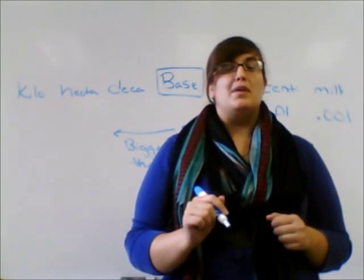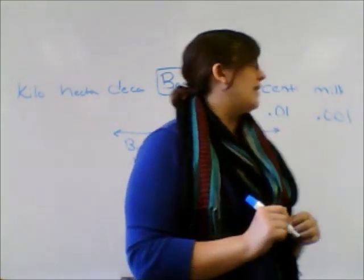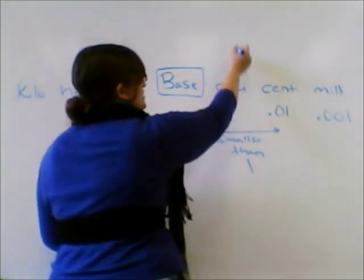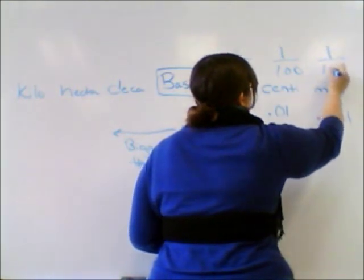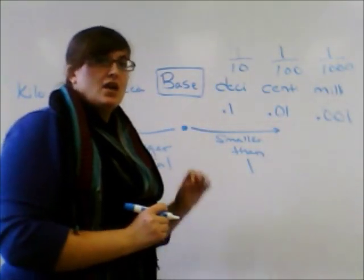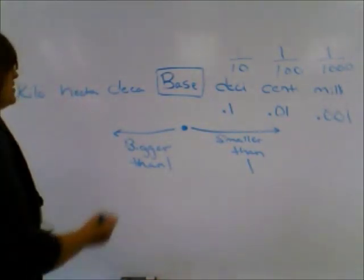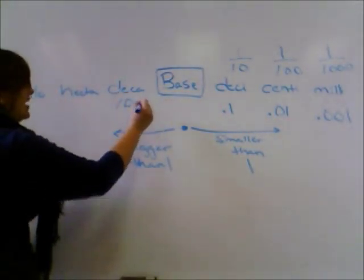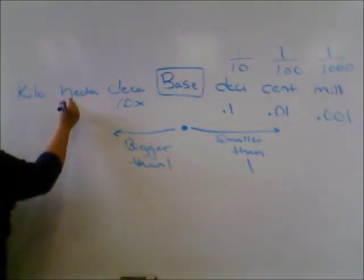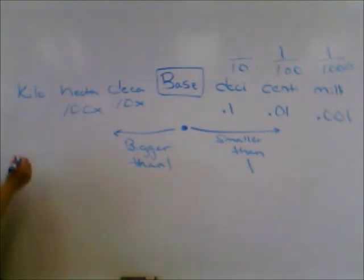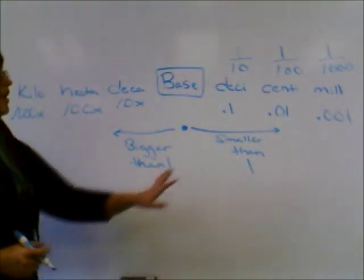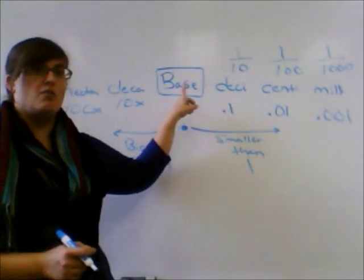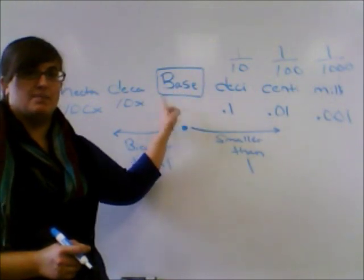Centi means a hundred, and milli means one thousand. So another way to put this is one over ten, one over one hundred, or one over one thousand. On the left-hand side, deca is ten times our base, hecta is a hundred times our base, and kilo is a thousand times our base. Another way to remember: there are ten decimeters in one meter — ten deci in one base.